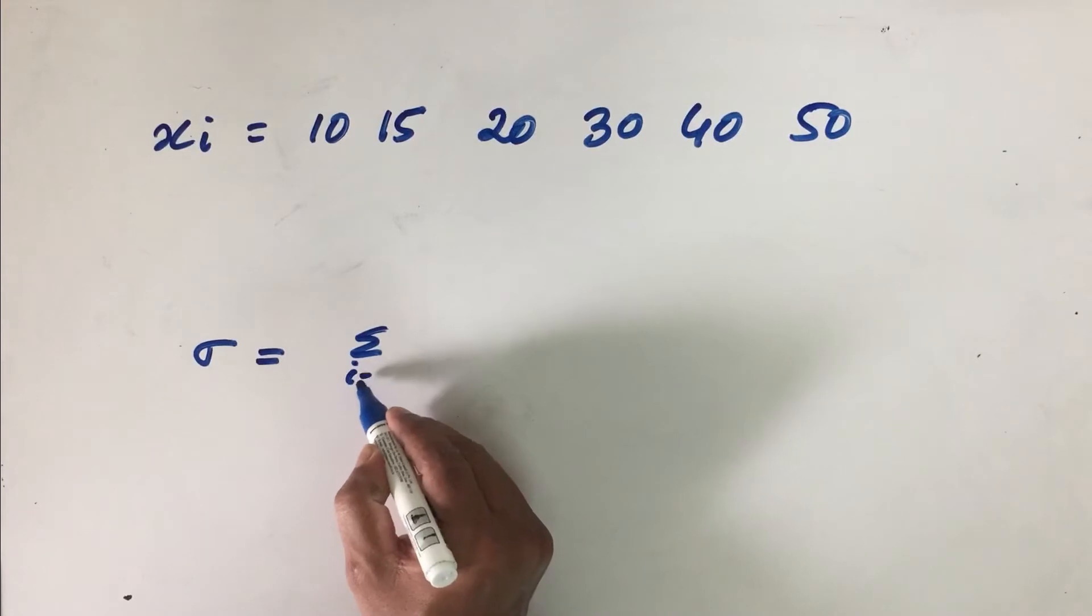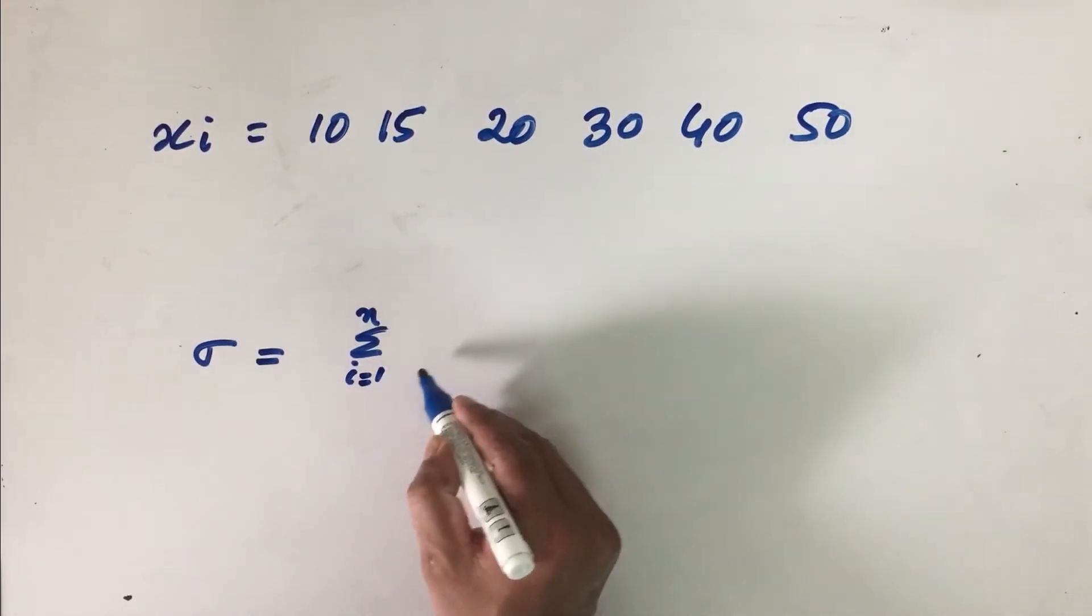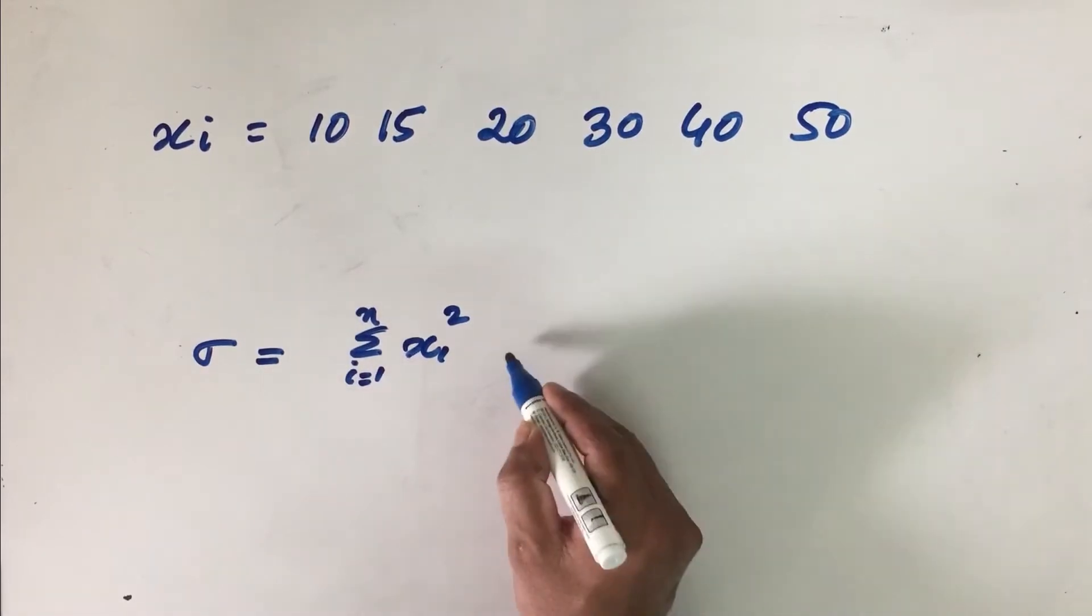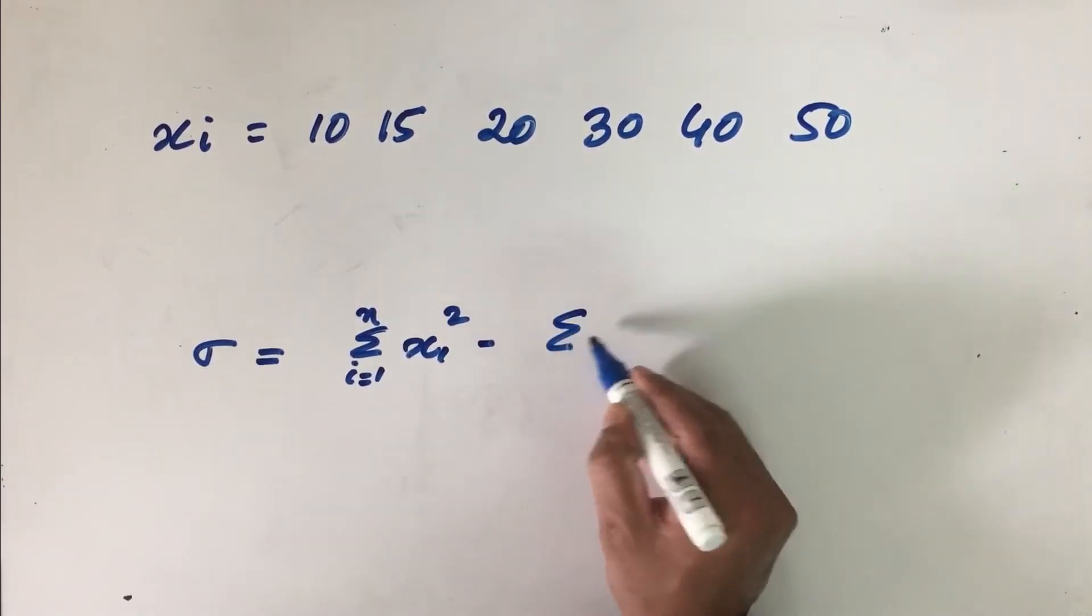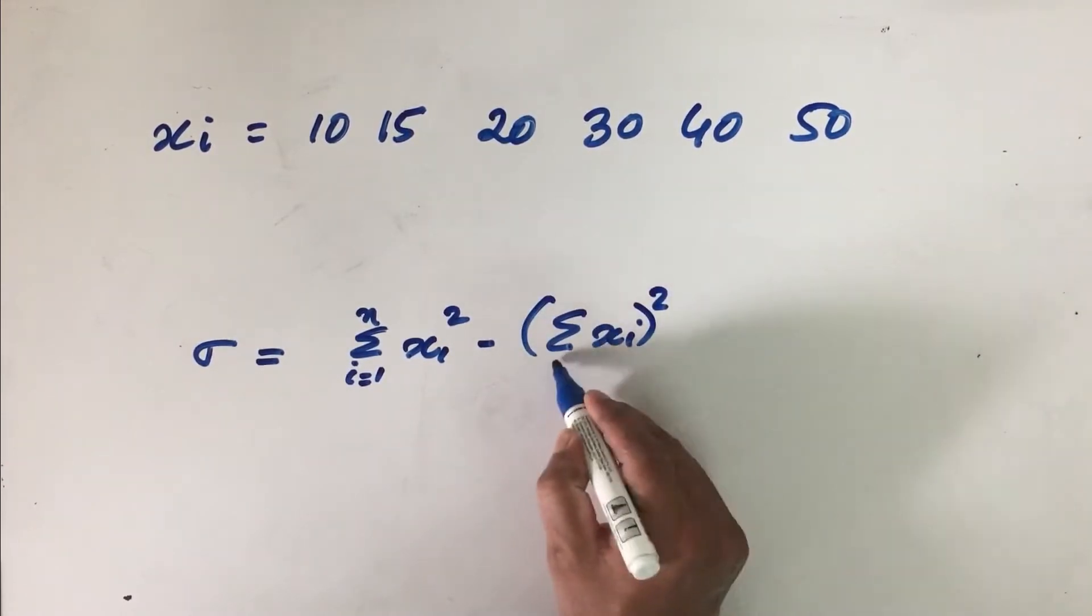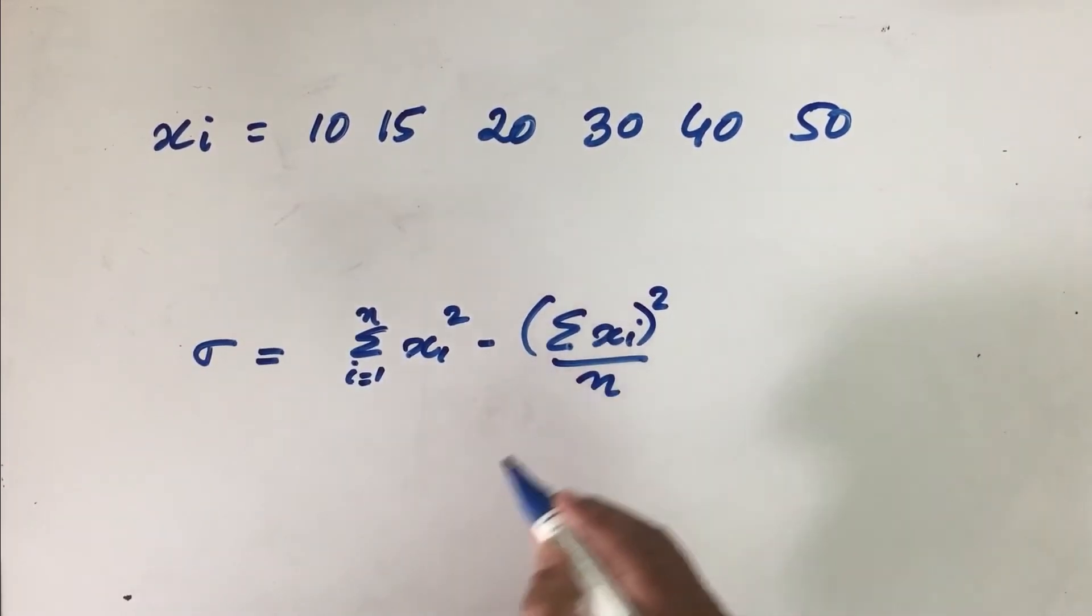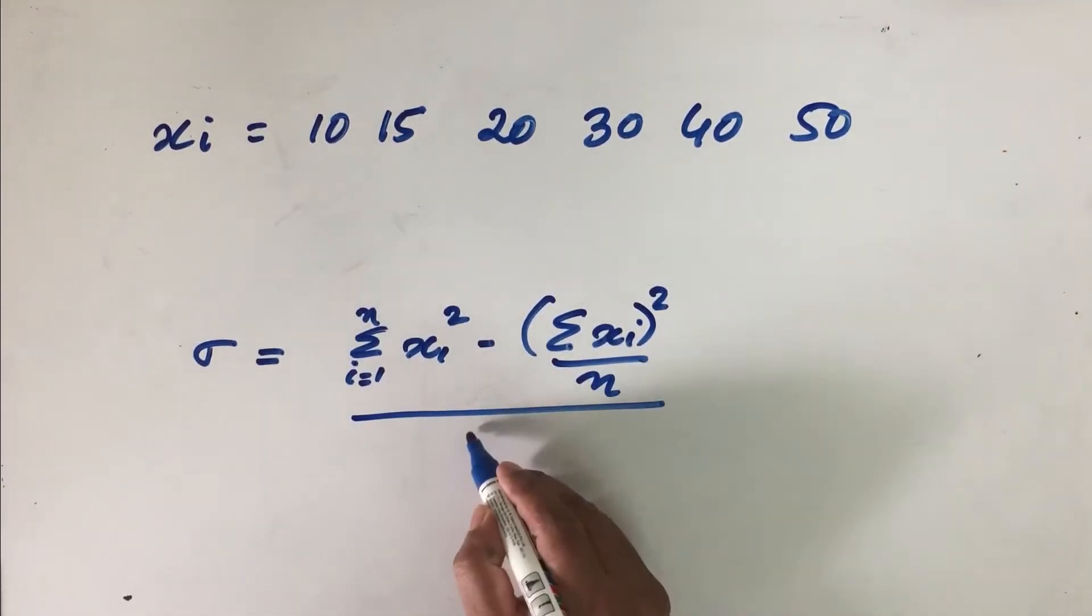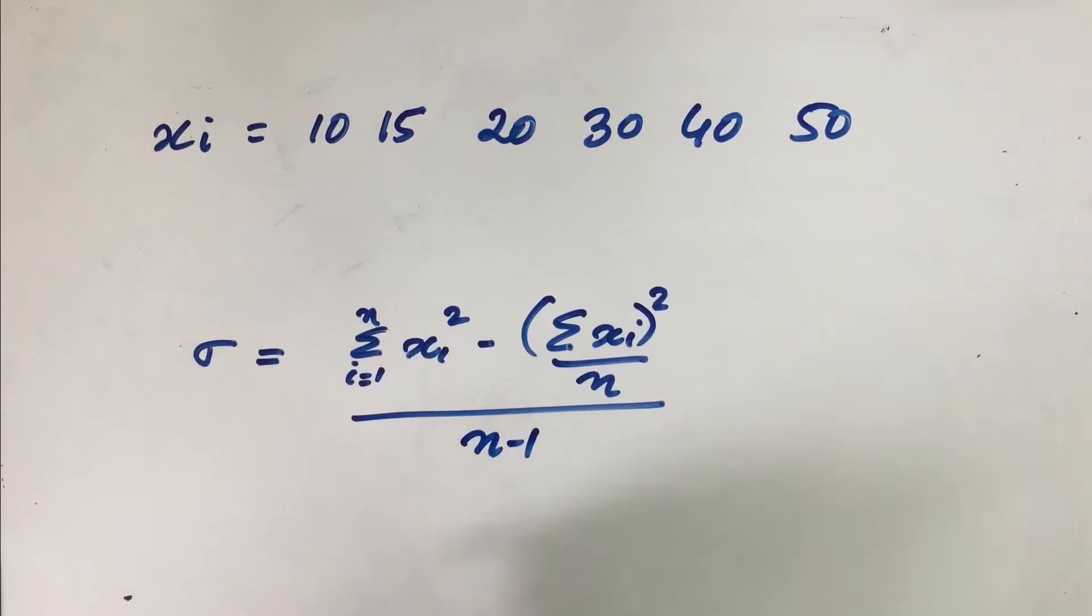Summation of all the values from 1 to n, xi square minus summation of all the xi squared, divided by number of observations, and this whole thing is divided by n minus 1, and find the root of that. This is the formula for calculating standard deviation.